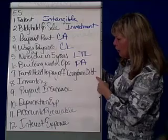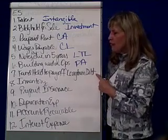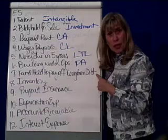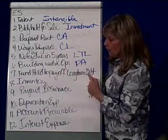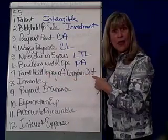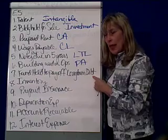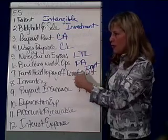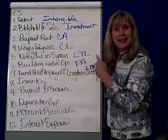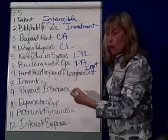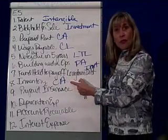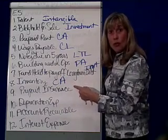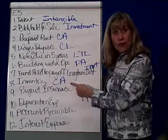A fund held to pay off long-term debt is like a Christmas club — you put away money because sooner or later you'll need it. A business holds funds so that eventually they can pay off their long-term debt. It's an asset because it has future potential value, and it's classified as an investment because you're investing those funds to use them later. Inventory is a current asset — that's the stuff you put price tags on, what's on your store shelves — and you hope to sell it soon, so it's current.